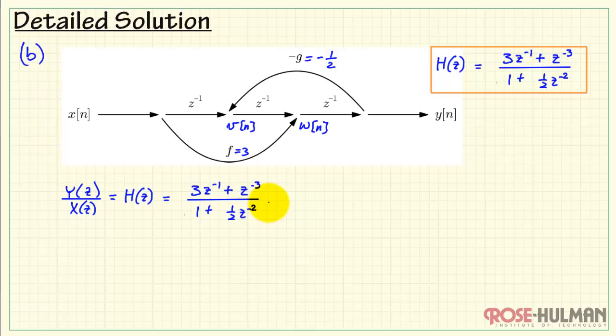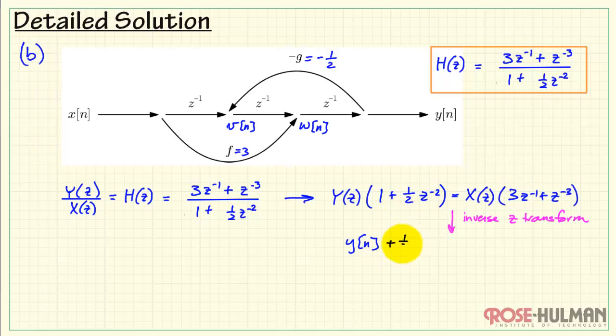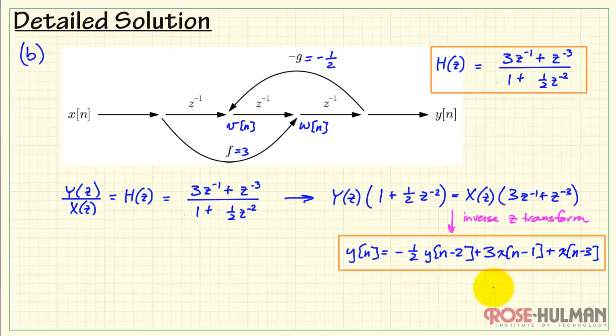Now, in part b, I'm going to begin with that system function that we just found. Let me get this back into the form where I associate the polynomials with y of z and x of z. From here, I can apply the inverse z transform. We would have y of n and then the twice-delayed version of y of n multiplied by 1 half. z inverse squared would translate into y of n minus 2. Looks like we've got 3 times x of n minus 1 plus x of n delayed by 3. Let me put this on the right-hand side, and that gives me the difference equation that we were looking for in part b.